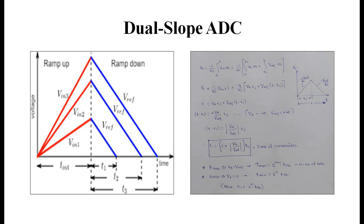To mention the slope again: the slope during the first phase is minus one over RC times Va. Since Va is negative, this whole value becomes positive, giving a positive slope on the graph. During the second phase, the slope is minus one over RC times Vref. Since Vref is positive, this gives a negative slope. This two-slope behavior — one positive ramp up and one negative ramp down — is exactly why the converter is called a dual slope ADC.